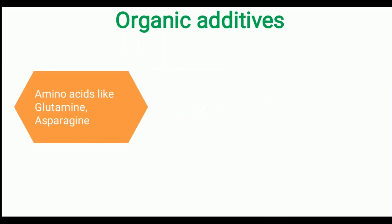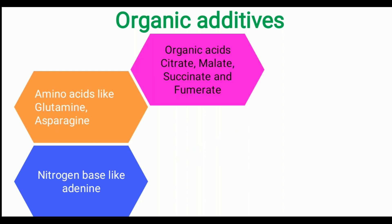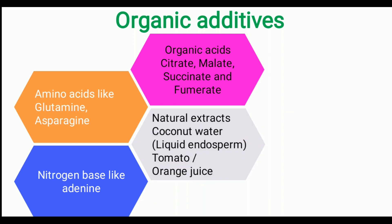Now we will see other organic additives. Amino acids such as glutamine and asparagine are added in certain tissue culture mediums for specific developmental progress. Nitrogen bases like adenine and nucleotides are also added. Organic acids — citrate, malate, succinate, and pyruvate/fumarate — are added in certain cases. Natural extracts such as coconut water (liquid endosperm), tomato juice, or orange juice are sterilized and added. However, it is better to avoid such natural extracts since the complete nutrient and mineral composition is unknown, making it impossible to predict which factor produces a growth or developmental effect.